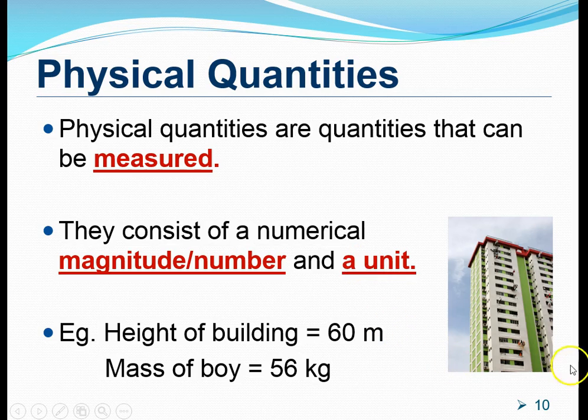So for example, if you look at this picture over here, it shows a picture of a housing block. Now, if you need to measure the height of the building and find that it is 60 meters, the height of the building is actually a Physical Quantity. And the 60 is what we call the numerical magnitude or number, and the meters, the small m here represents the meter, which is actually a unit.